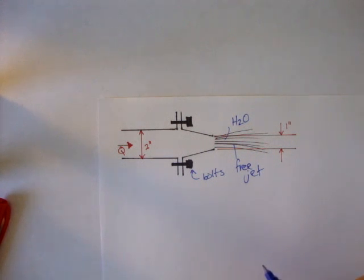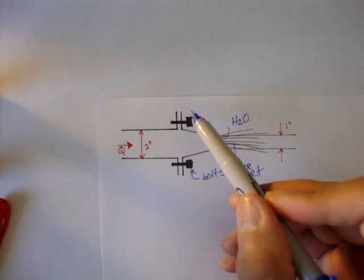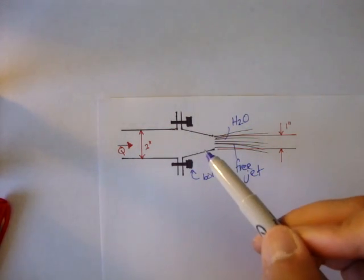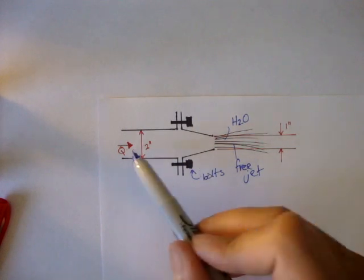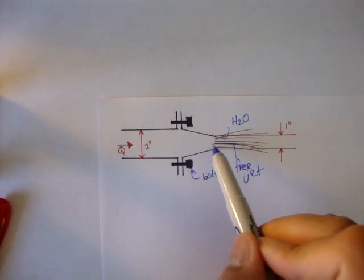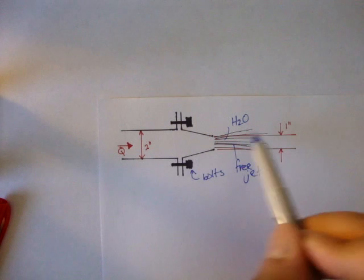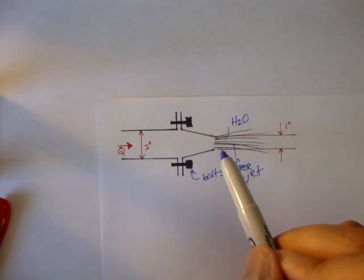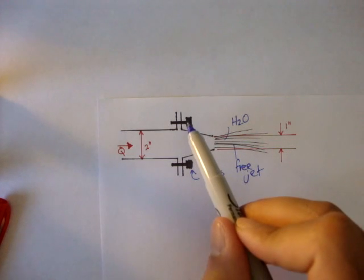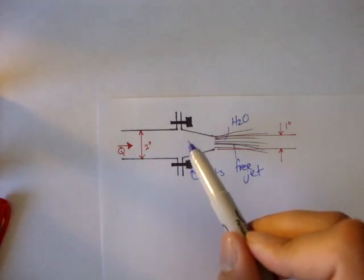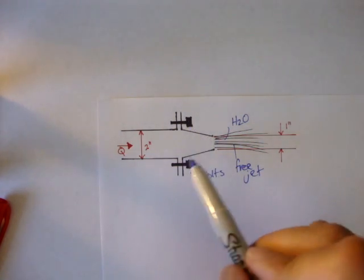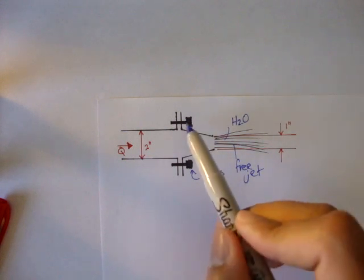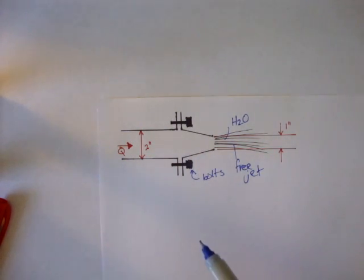And the question asks, what is the required resultant force of the bolt to keep this nozzle attached? So water's getting pumped in, it's exiting here at the tip. And that's going to cause a force in the bolts. And so we're trying to figure out what's the force in the bolt to keep the nozzle from not coming off.